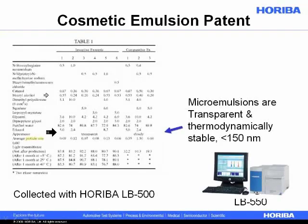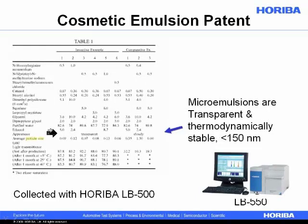What this usually says to me is they're creating a microemulsion. Microemulsions are transparent, thermodynamically stable, and generally won't separate. So this is an example where a patent is based on creating a microemulsion as opposed to a macroemulsion, which is expected to therefore be transparent and actually have a better shelf life.